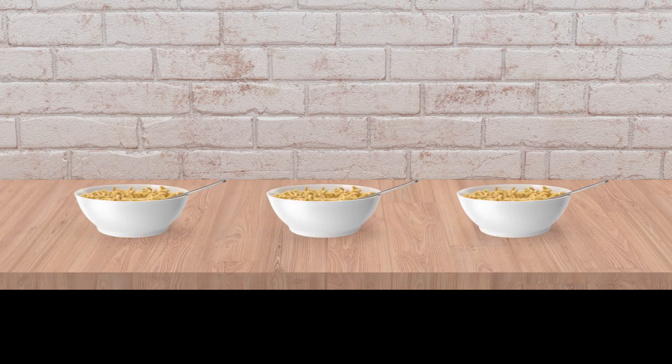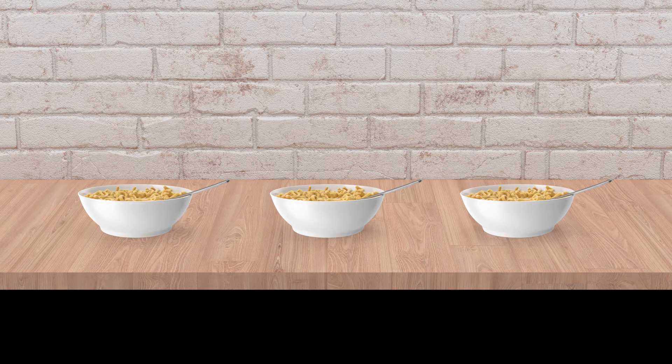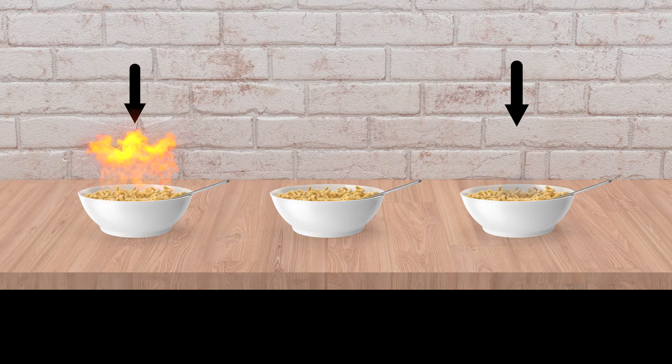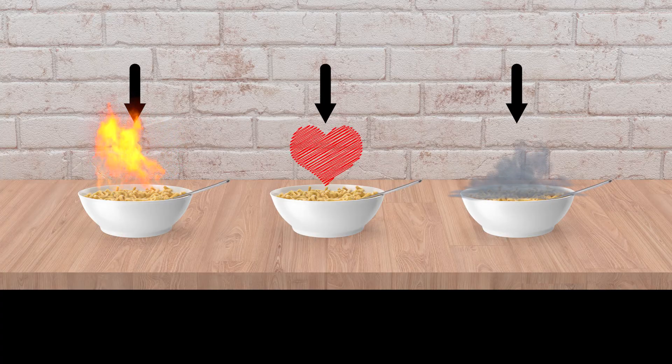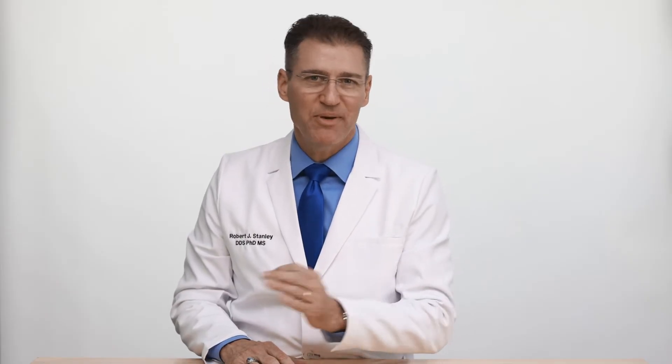In engineering, optimizations work like Goldilocks and the porridge: this one is too hot, this one is too cold, and this one is just right. That is how we need to approach implant sizing. In this case, it's okay to be picky.